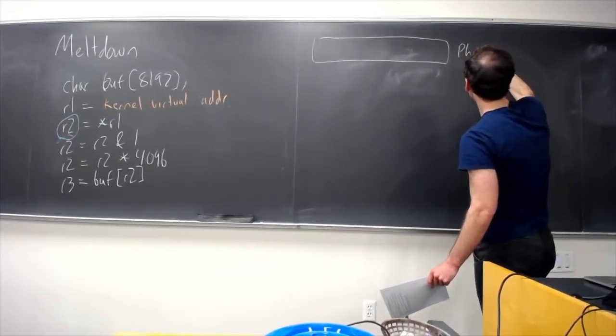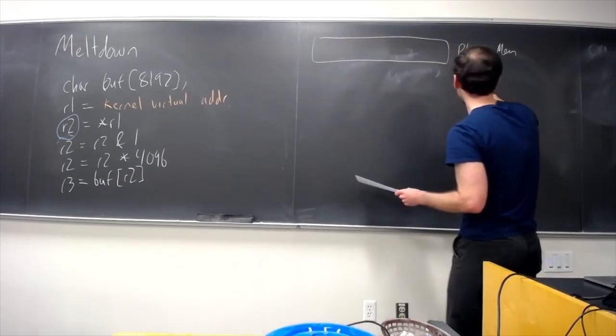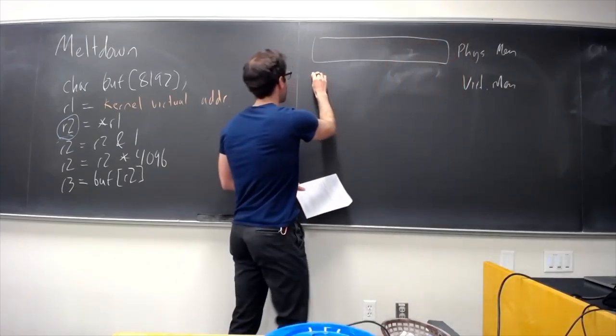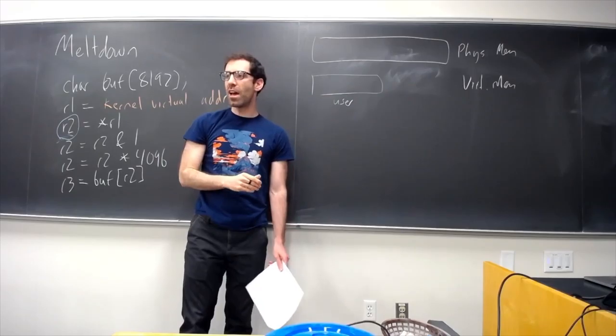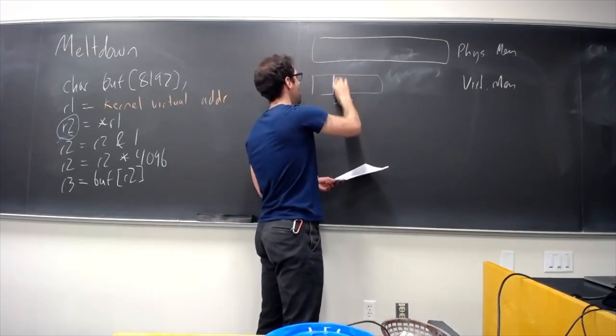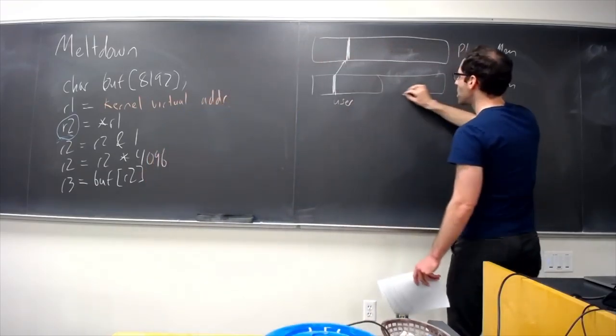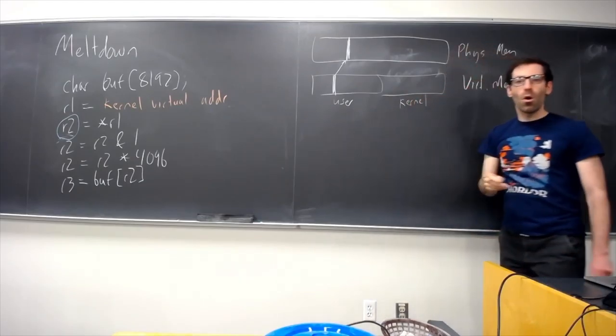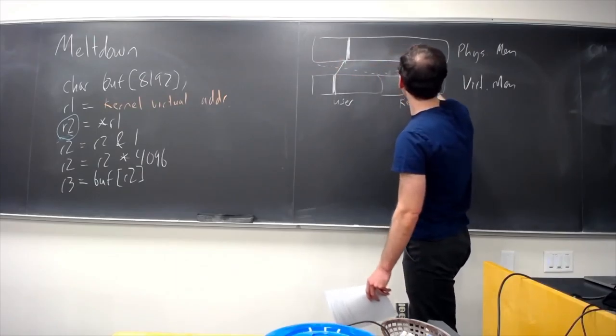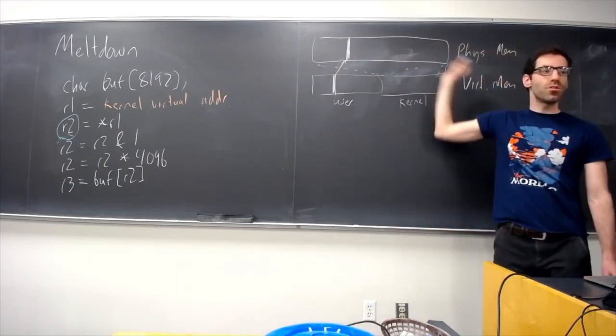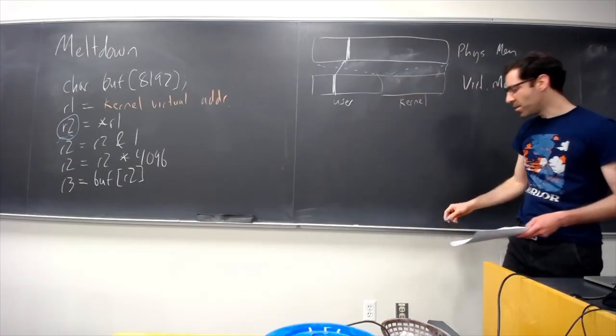There is some kind of range of that virtual memory that is kind of the user mappings. These are virtual addresses that the user is allowed to access. And so maybe we can get to kind of some physical memory using an entry in the user page table. But the user's page table also includes all the mappings from the kernel. And in fact, the kernel mappings will encompass all of physical memory. The kernel has page table entries for all pages in physical memory because it wants to be able to access every single place in physical memory.